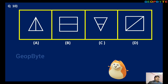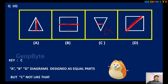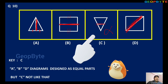Observe A, B, C, D. In option A, if we take a line, it divides the triangle into two equal parts. If we take this line, the rectangle or square is divided into two equal parts. If we take this diagonal, the diagram becomes two equal parts. But in option C, if we take this line, it does not divide into equal parts — so option C is the answer. A, B, D diagrams are designed to give equal parts, but C is not like that.